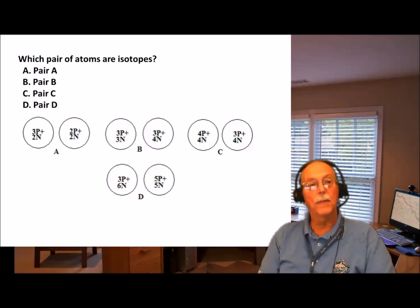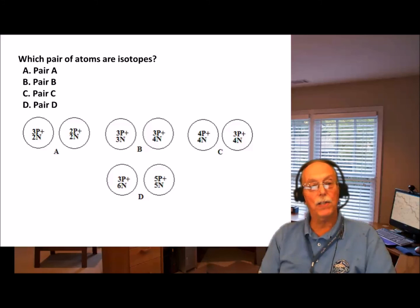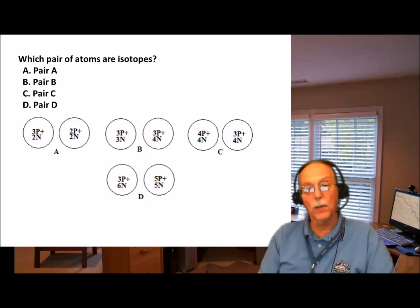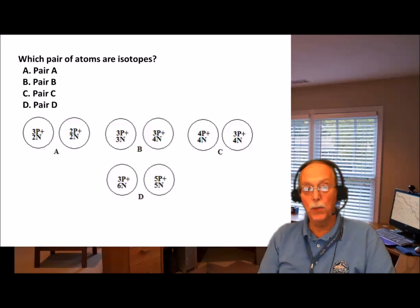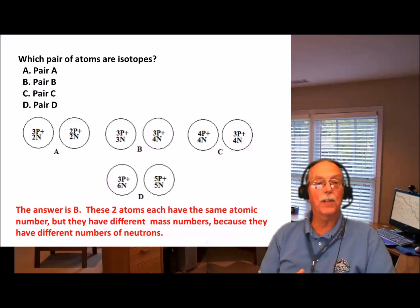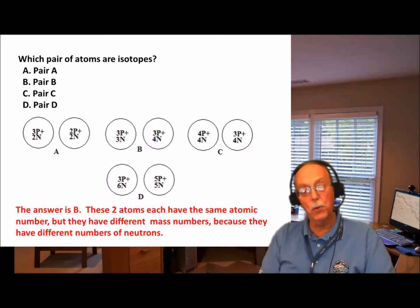Here's another question: Which pair of these atoms are isotopes? Here are four pairs of atoms — look at them carefully and see if you can determine which pair represents isotopes of the same element. All you have to do is look for atoms that have the same number of protons and different numbers of neutrons. The answer is pair B. These two atoms each have the same atomic number but different mass numbers because they have different numbers of neutrons in the nucleus.